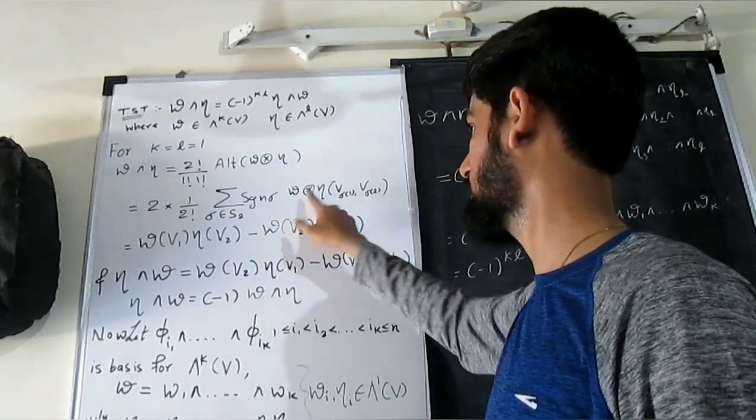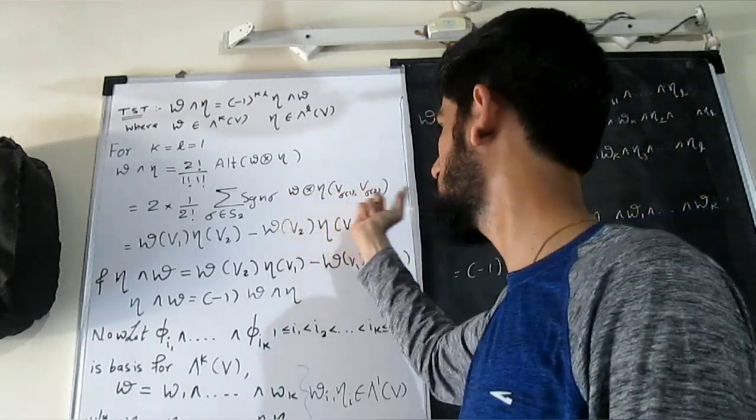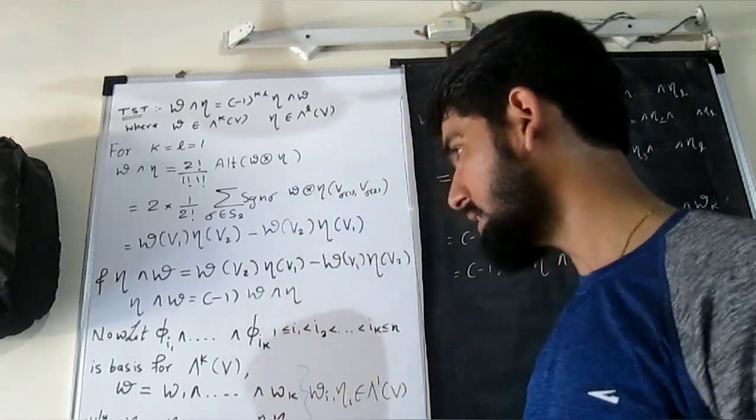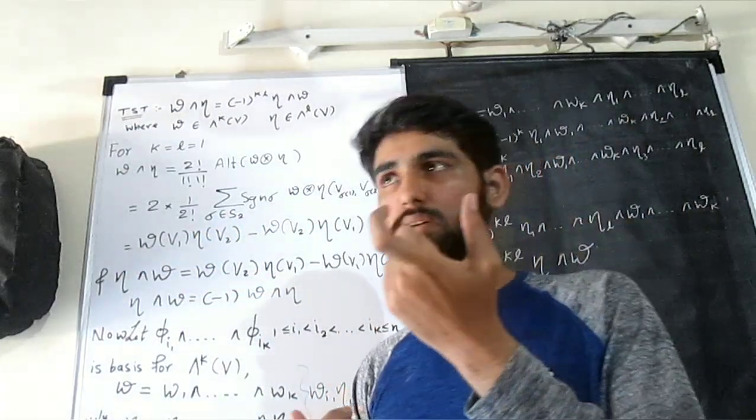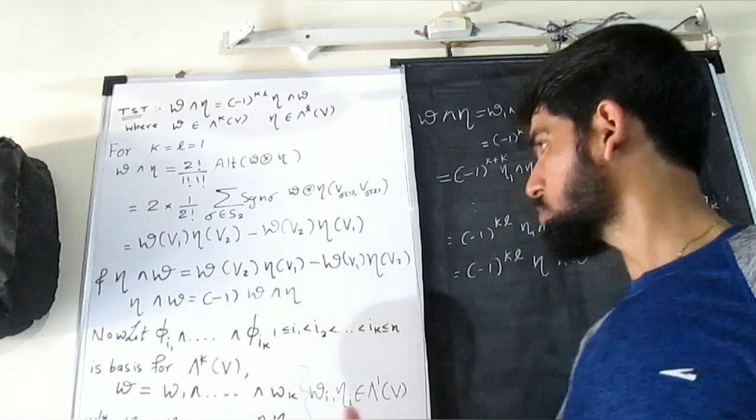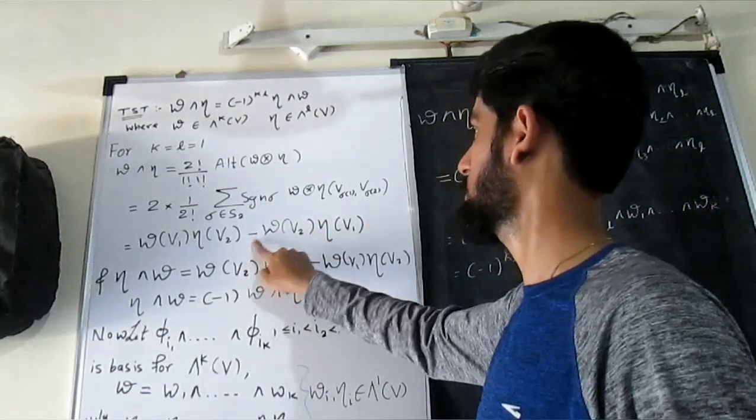And we have used the definition of tensor, it will split over it. And sign of identity is plus 1, so we get plus 1 over here. And sign of the other one, that is transpose 1 goes to 2, 2 goes to 1, that is minus 1.